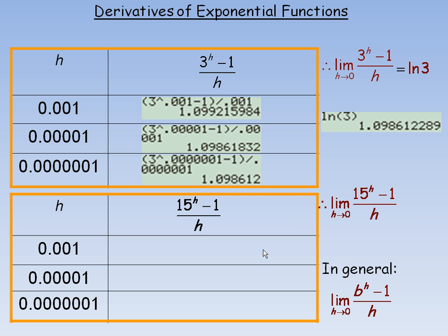Just trying to show you that it is always the ln of that base number. So we're going to put the same numbers in place of h. So it would be 15 to the power of 0.001 minus 1 divided by 0.001. We get 2.717, etc. If we put this number that's even closer to 0 in place of h, we get that. So it's 2.7 something.